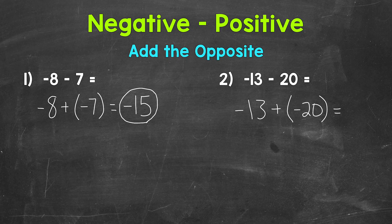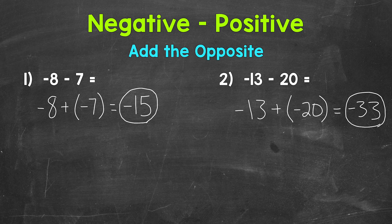That gives us negative 33. And that is our final answer. So there you have it. There's how you subtract a positive integer from a negative integer. And remember, whenever you subtract a positive, you are decreasing in value.